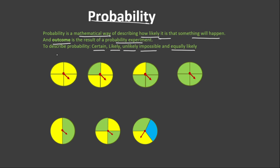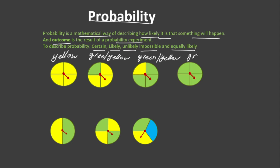So the possible outcome for the first spinner over here is yellow. The possible outcome for the second spinner is green and yellow. The possible outcome for the third spinner is also green and yellow. But the possible outcome for the last spinner is green.